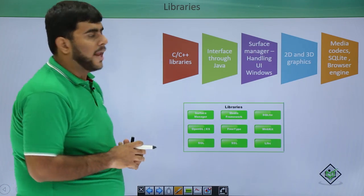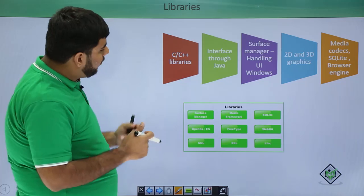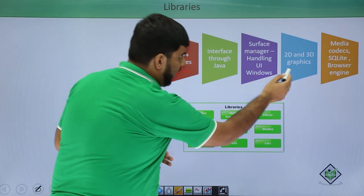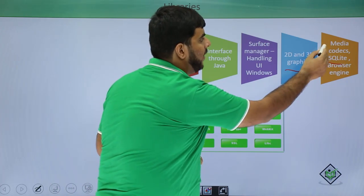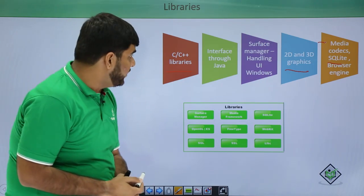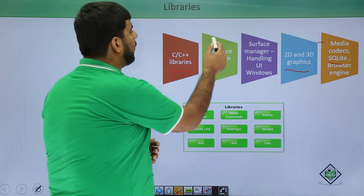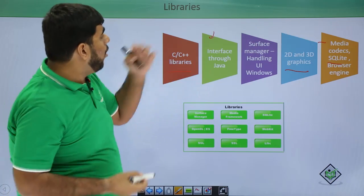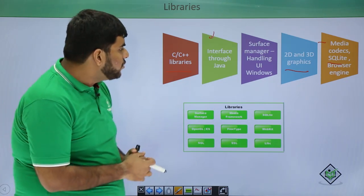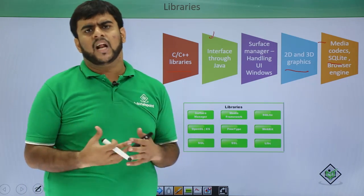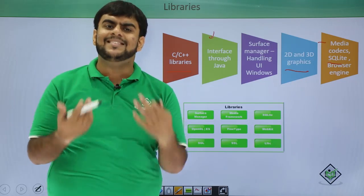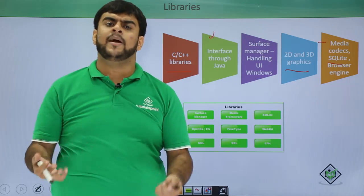We then move on to libraries. These include C or C++ libraries, graphics, SQLite, media codecs, and the browser engine — all part of libraries. Along with them, some Java interfaces and Java interactions also come as part of the library in Android architecture. To make it simple: some standard procedures that are there for the purpose of easing development are what make up the libraries.